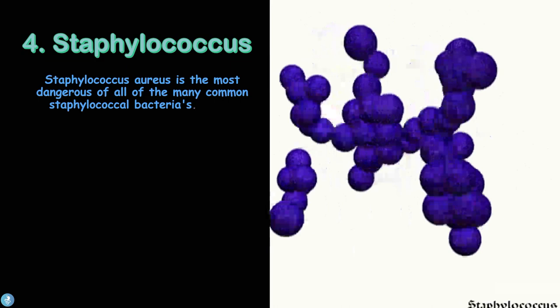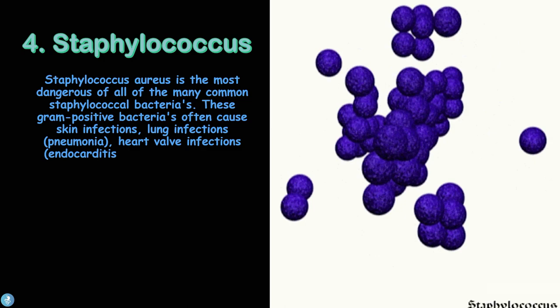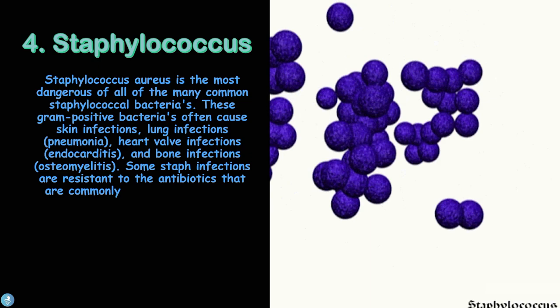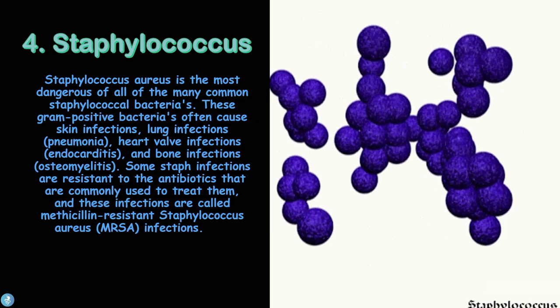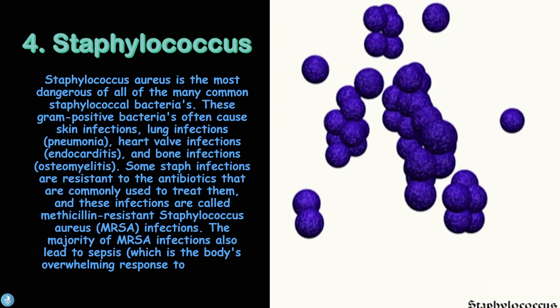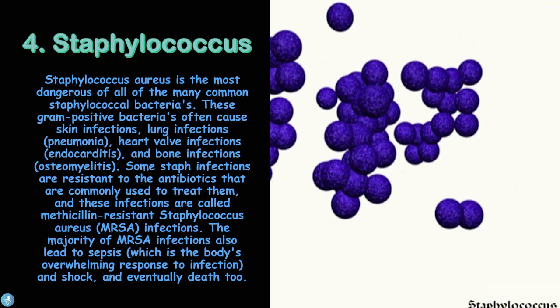Number four is Staphylococcus aureus, the most dangerous of all common staphylococcal bacteria. These gram-positive bacteria often cause skin infections, lung infections such as pneumonia, heart valve infections such as endocarditis, and bone infections such as osteomyelitis. Some staph infections are resistant to commonly used antibiotics, and these are called methicillin-resistant Staphylococcus aureus, or MRSA, infections.